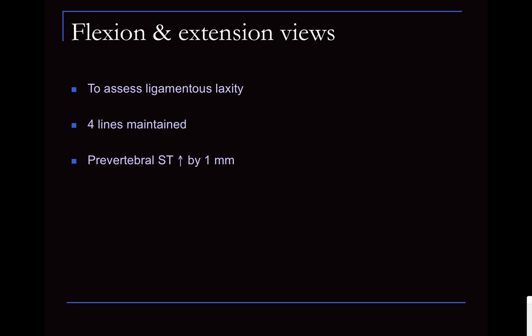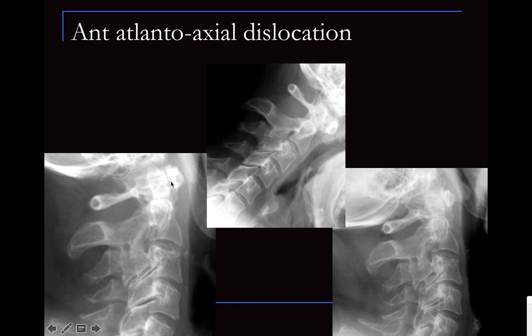We may also do flexion and extension radiographs of the cervical spine to assess for ligamentous laxity. Again, in a patient with acute trauma you do not want to exaggerate any existing injury, but in non-acute cases this may be done. You look at the three lines — and a fourth line along the tips of the spinous processes — all should be smooth with no disruptions and parallel to each other. The prevertebral soft tissue can increase slightly on these views. For example, the neutral radiograph may look normal, but on flexion the atlanto-dental space may increase, revealing anterior atlanto-axial dislocation that would be missed on a neutral view alone. Flexion-extension radiographs therefore play an important role.